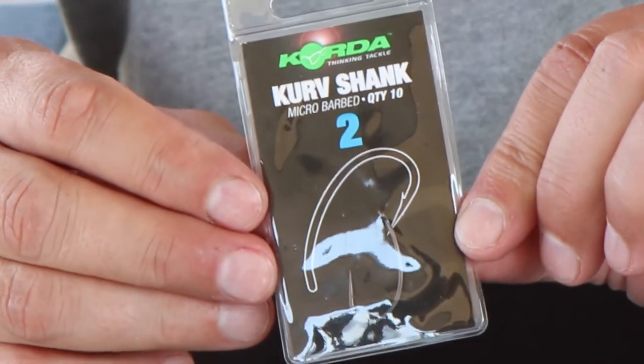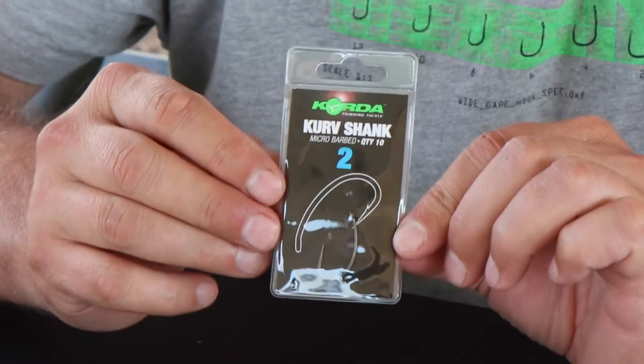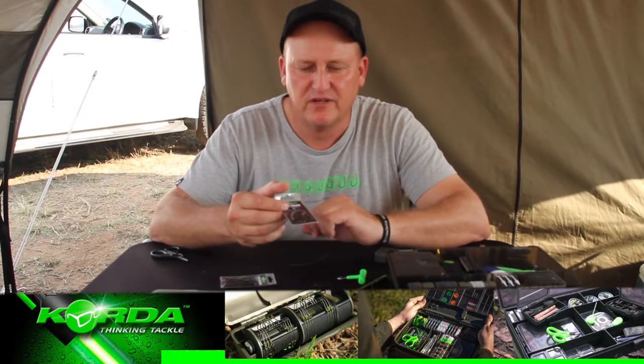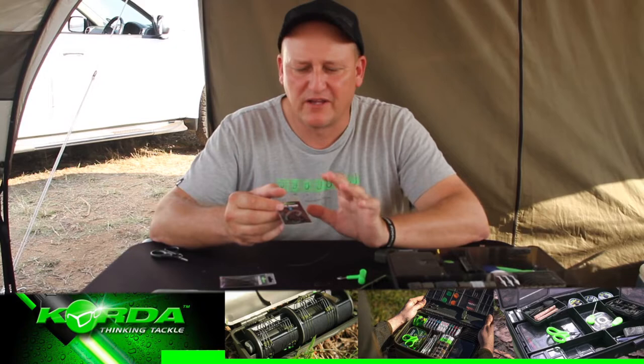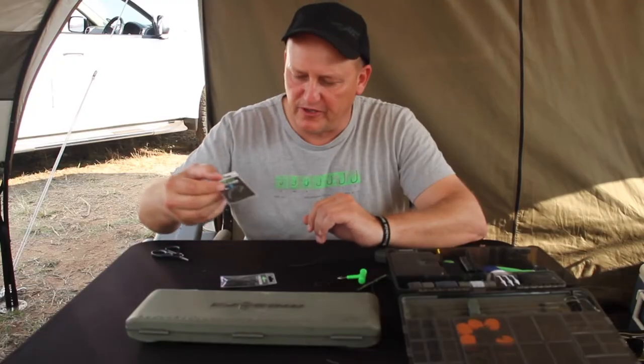I'm going to be using a Korda curve shank size 2. I love using big hooks because big hooks can catch any size fish. But a small hook if you are fishing against snags and weed, you just don't want to fish a small hook. So I prefer the big hooks.